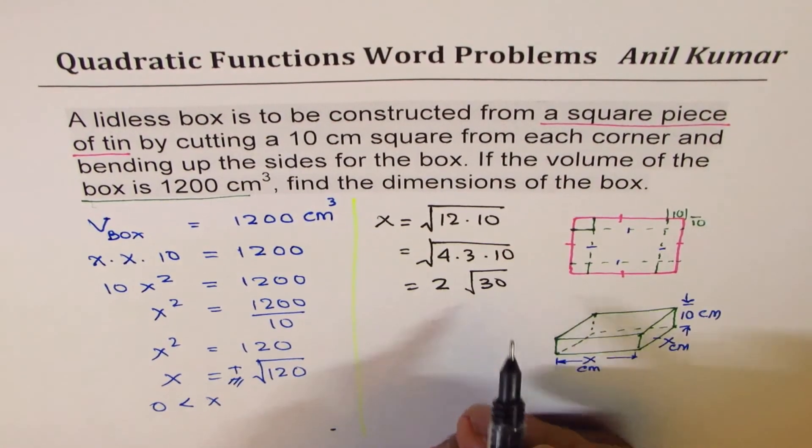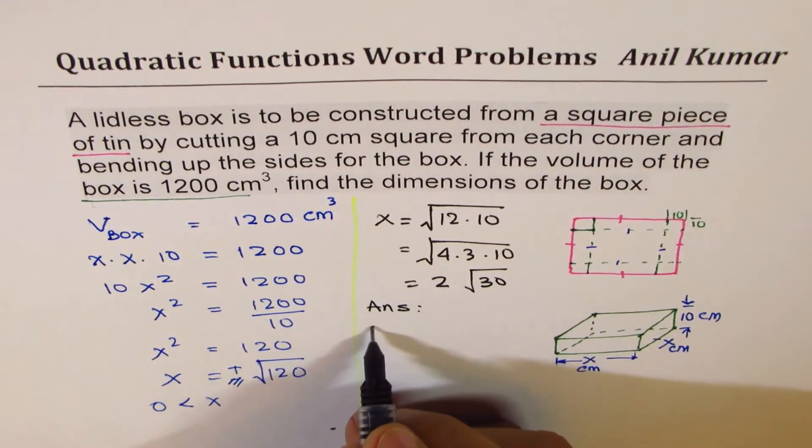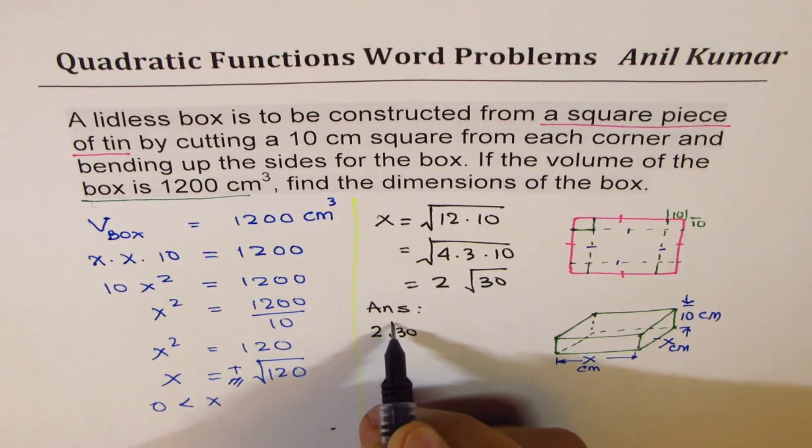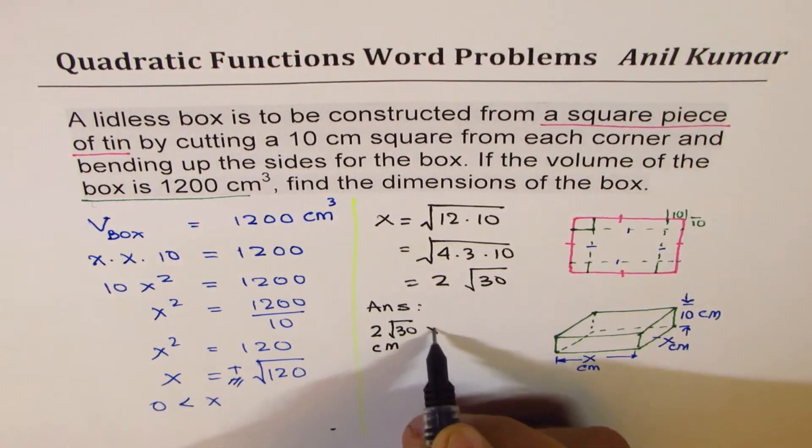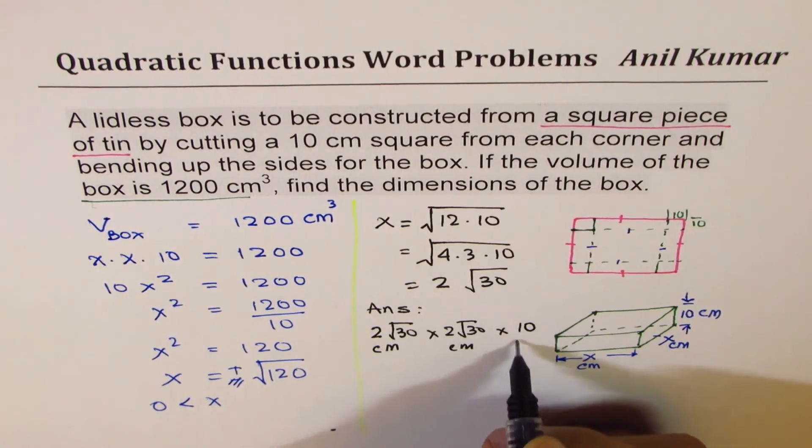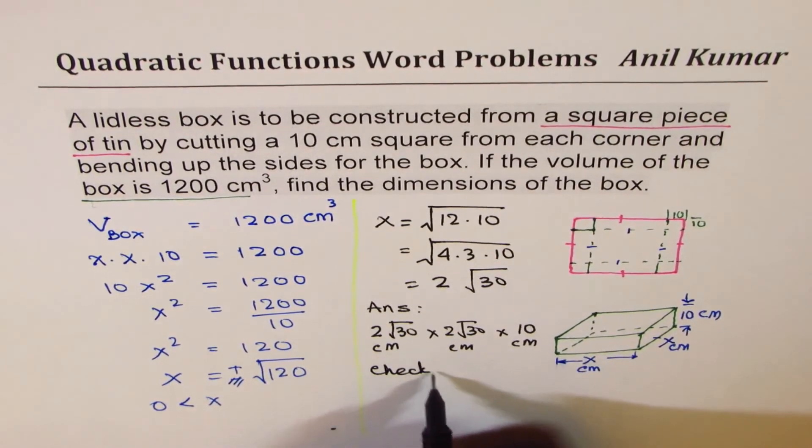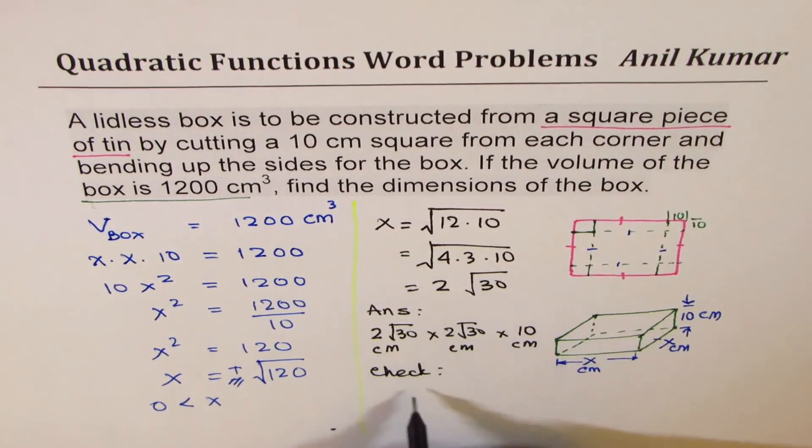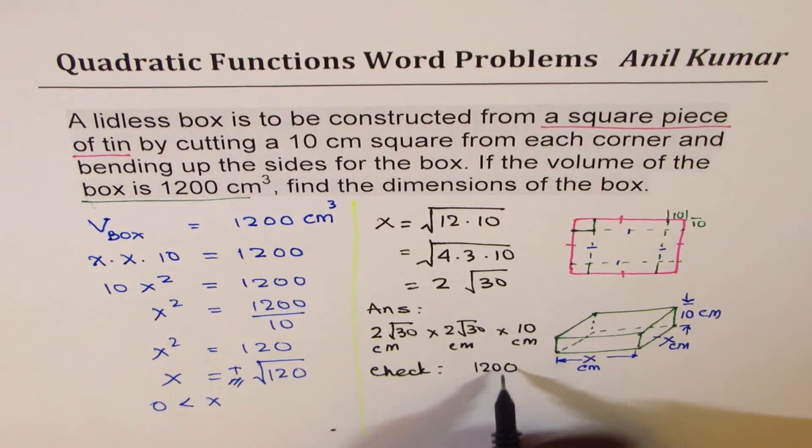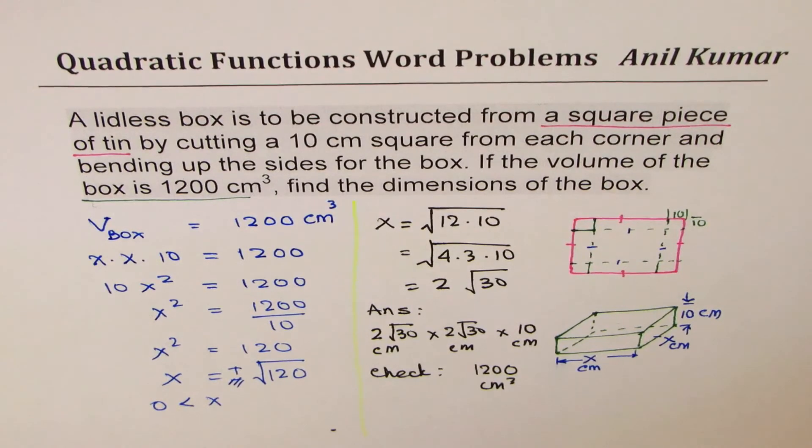So that becomes the dimension. So you can now write the answer that it is 2√30 centimeters times 2√30 centimeters times 10 centimeters. Now it's a good idea to check also. So when you multiply all this you should get 1200 centimeter cube. So that is how a question should be solved.